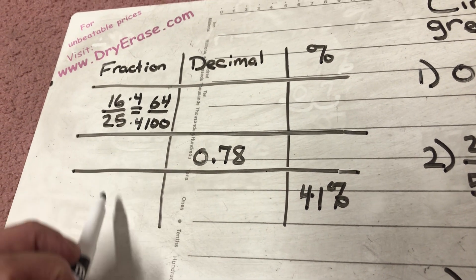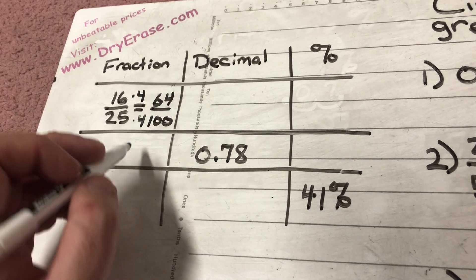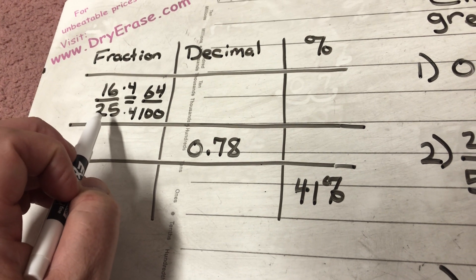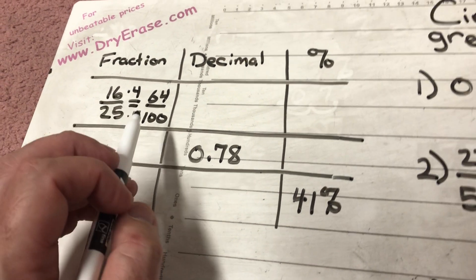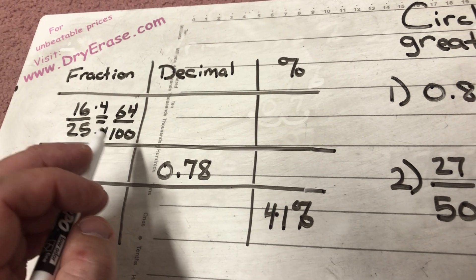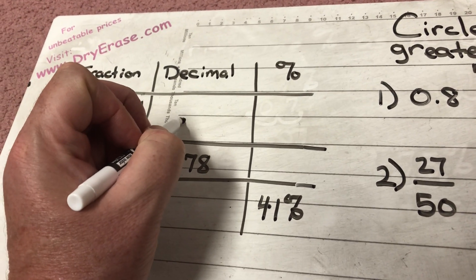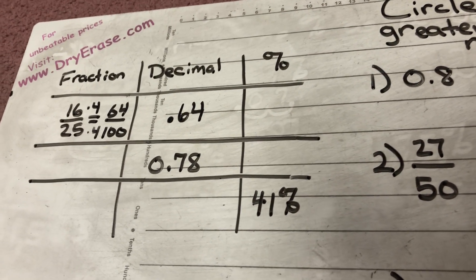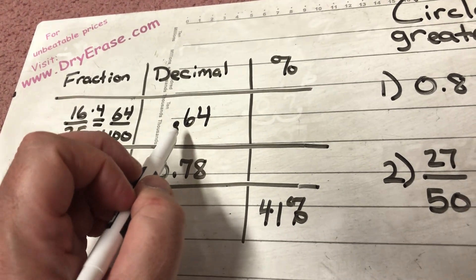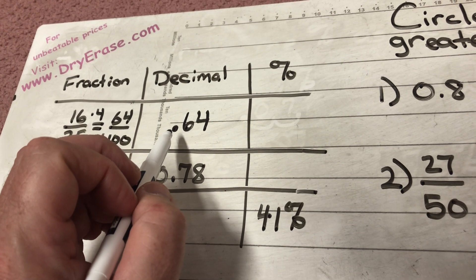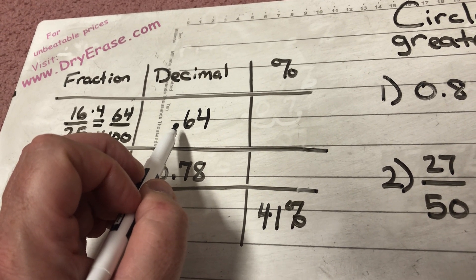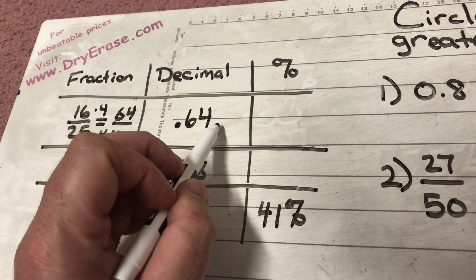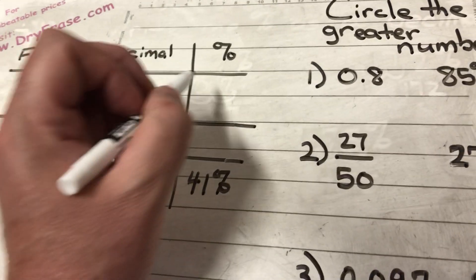Now, fractions in this table have to be in simplest form — but the original 16 over 25 already was. Our equivalent fraction is 64 over 100, or sixty-four hundredths, which as a decimal is written as 0.64. As we learned yesterday, to turn a decimal into a percent you multiply by 100 — move the decimal two places to the right — so the equivalent percent is 64 percent.